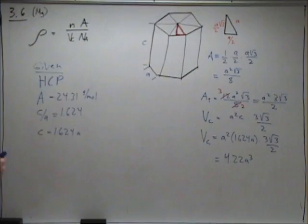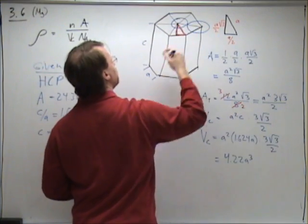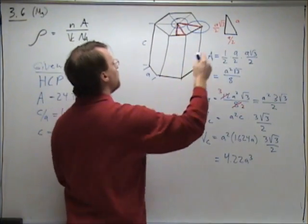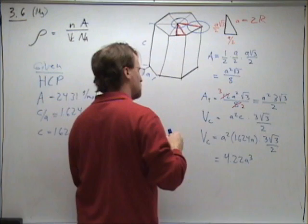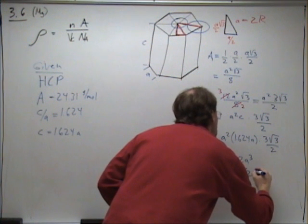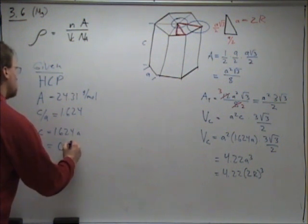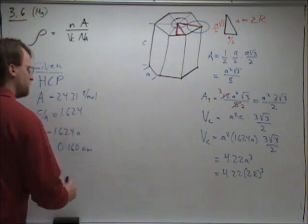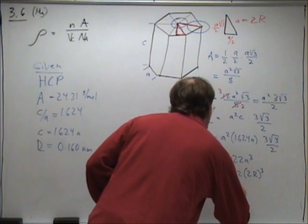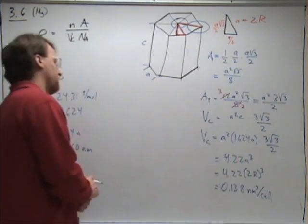For hexagonal close-packed, we have an atom here that is in contact with this atom here, so this distance equals 2 times the radius. So we have 4.22 times 2r cubed. We can look up the radius. The radius is 0.160 nanometers. Putting all that together, we end up with 0.138 cubic nanometers per cell. That's the volume.